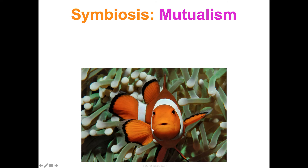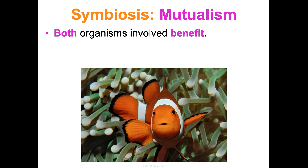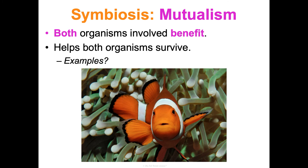Last but not least is mutualism, where both organisms benefit from the relationship and it helps both survive. One example is the clownfish and the anemone — the anemone provides protection for the clownfish, and the clownfish attracts prey for the anemone and keeps it clean of bacteria. I hope this was a helpful overview of ecological relationships.